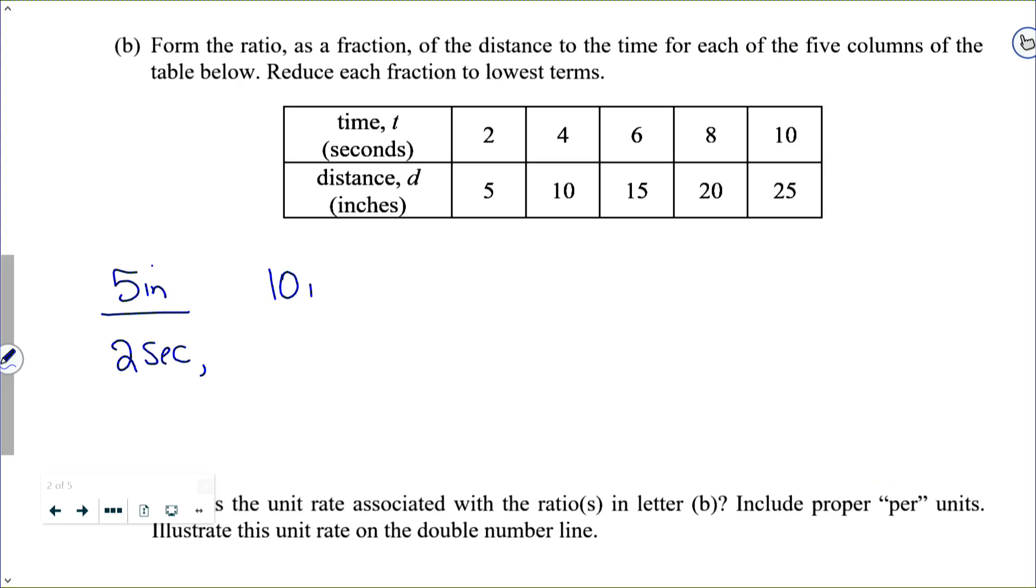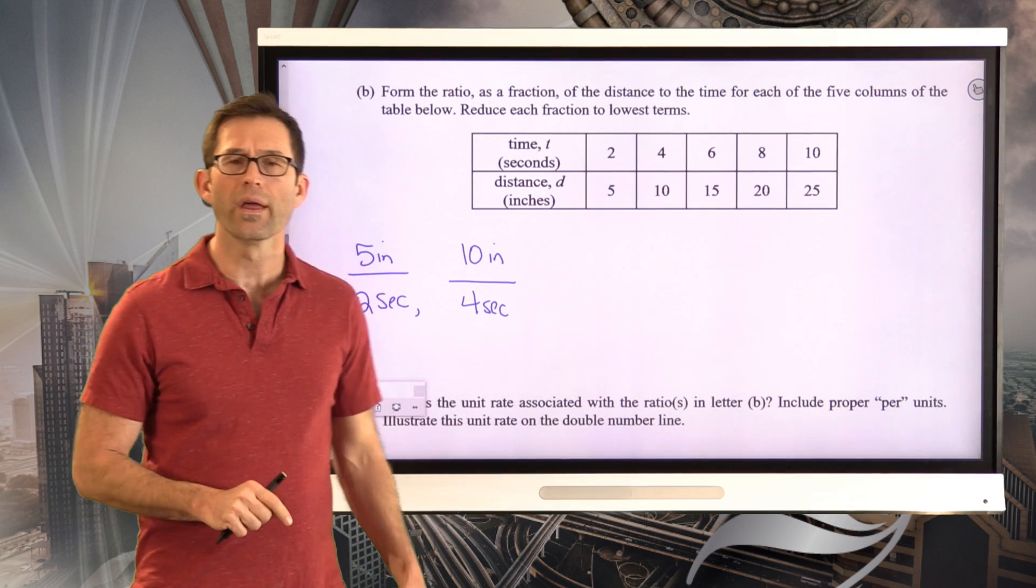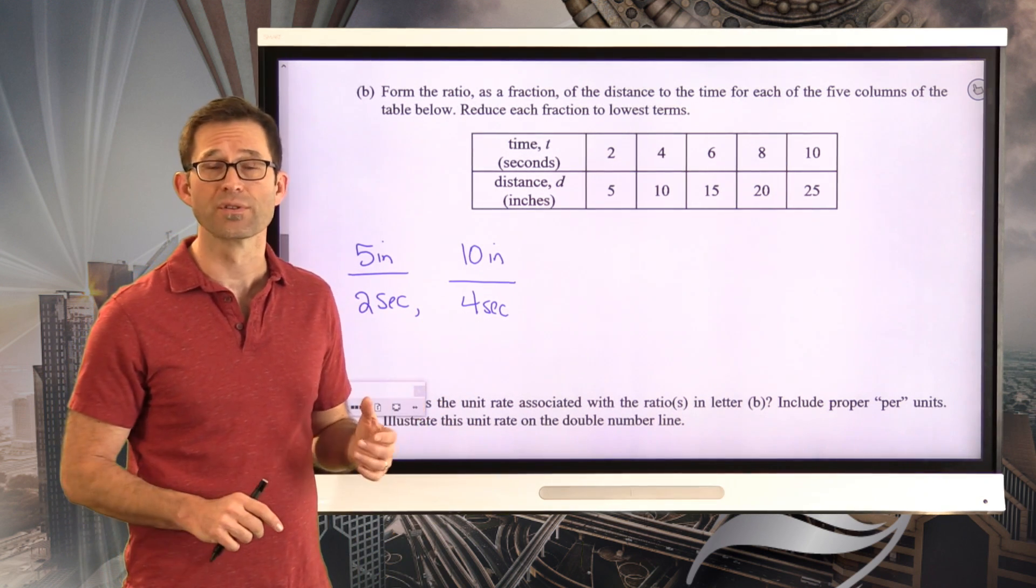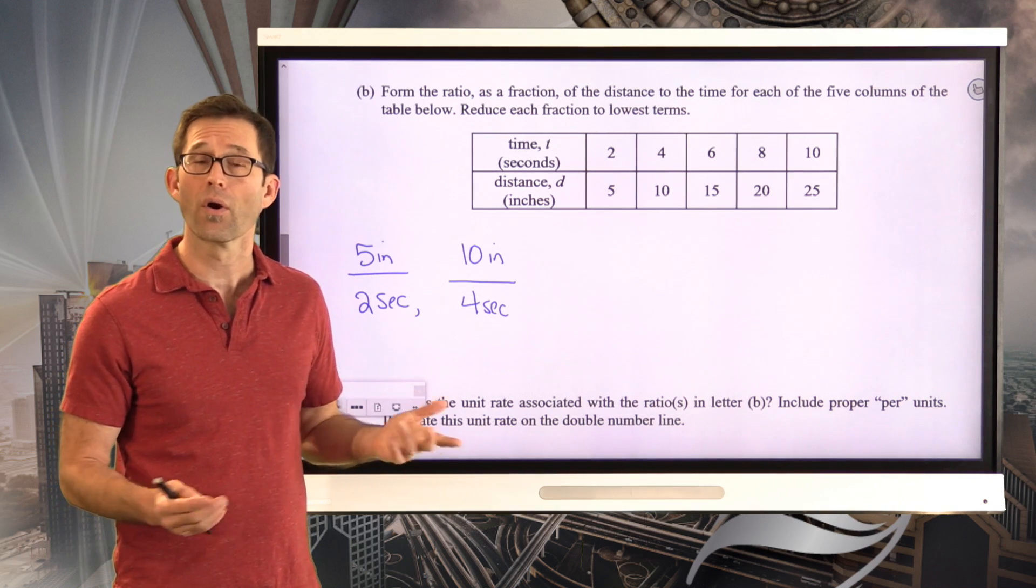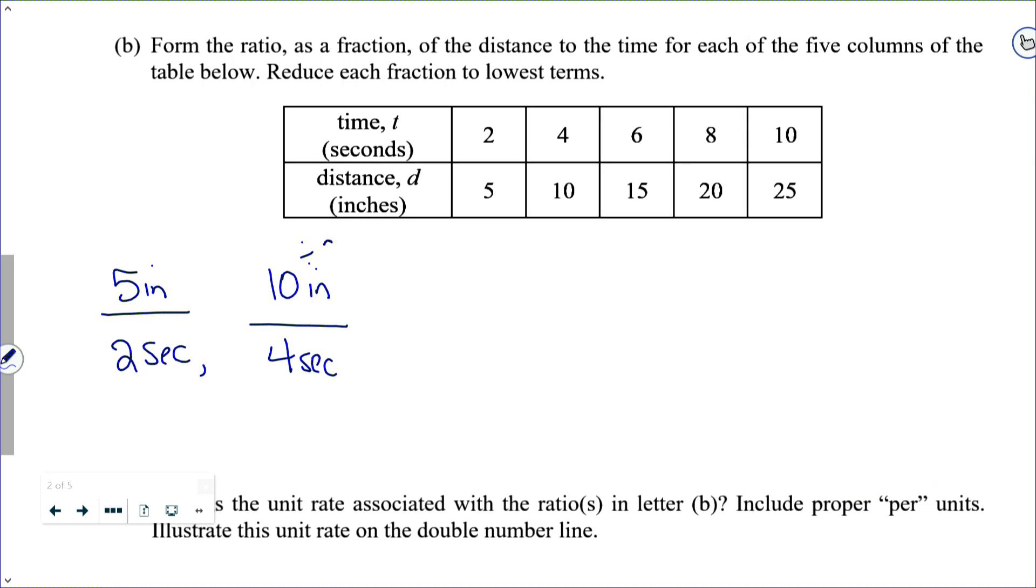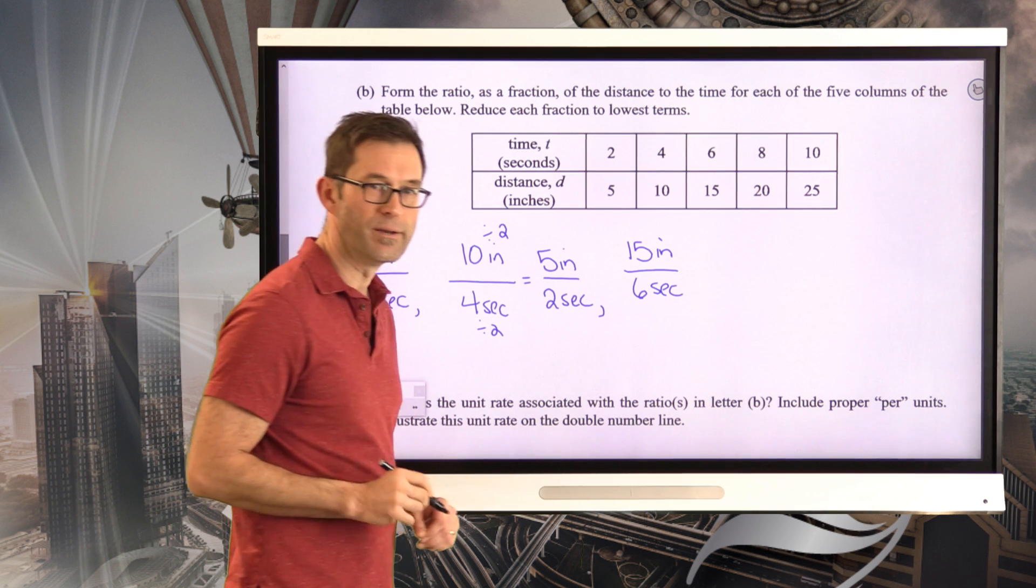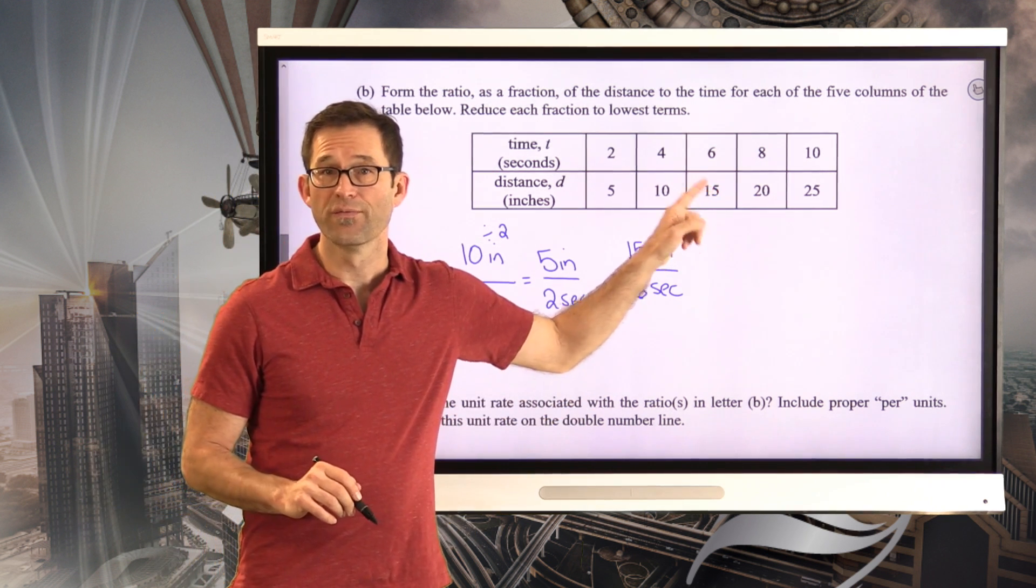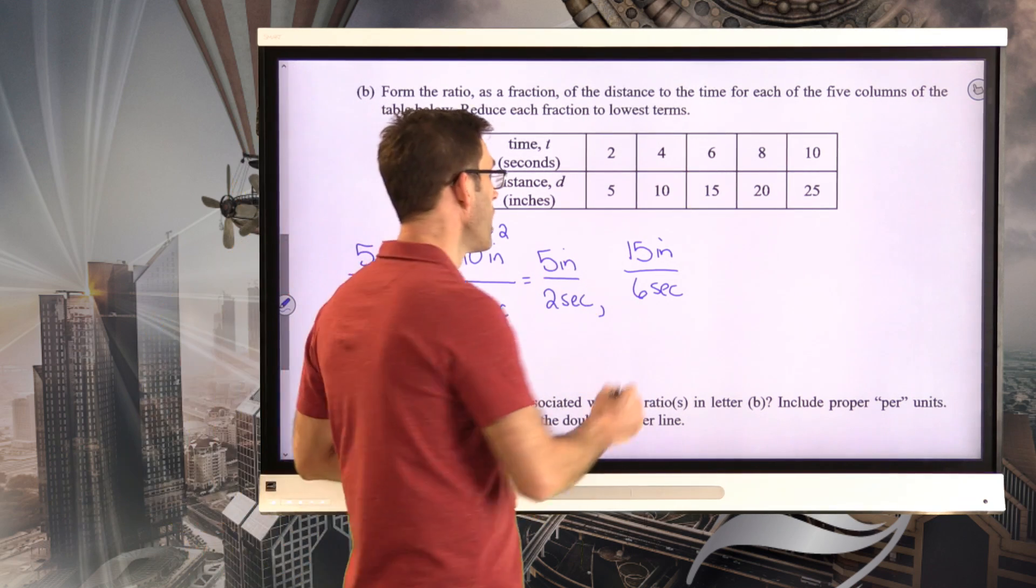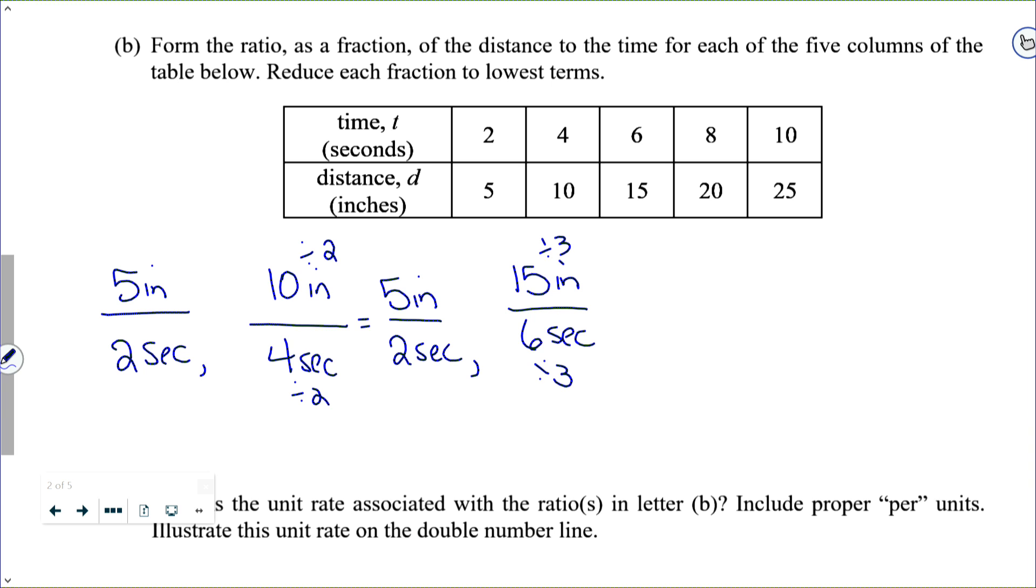The second ratio ends up being 10 inches per four seconds. But as we know, this fraction or ratio is not in simplest form because both the numerator and the denominator are divisible by two. So if we go ahead and do that, divided by two, divided by two, we would find five inches to two seconds. Likewise, our next ratio, 15 inches to six seconds. This ratio is just 15 to 6, which we can reduce by dividing both numerator and denominator by three. And if we divide numerator and denominator by three, we end up getting five inches to two seconds.